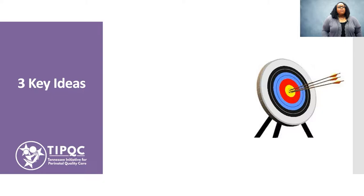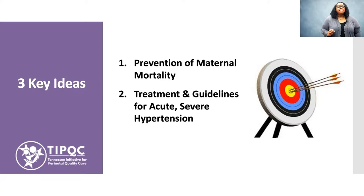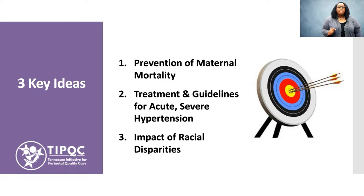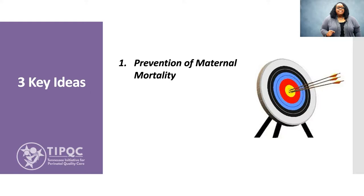We are going to be focusing on three specific ideas today. First, prevention of maternal mortality as it relates to hypertensive disorders. Second, treatment and guidelines for acute severe hypertension. And third, the impact of racial disparities on hypertensive disorders. Let's start with the discussion with our first key idea: prevention of maternal mortality as it relates to hypertensive disorders.